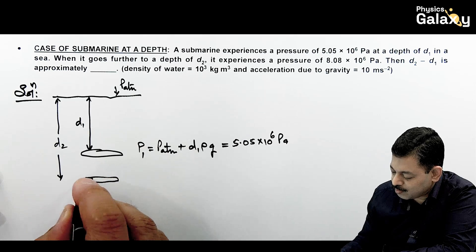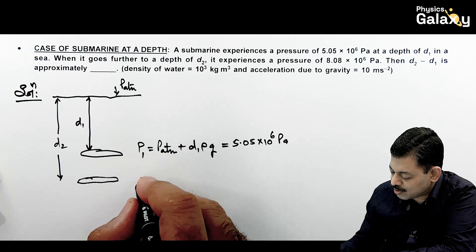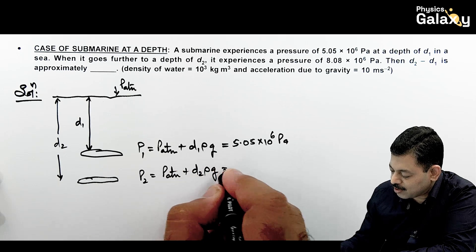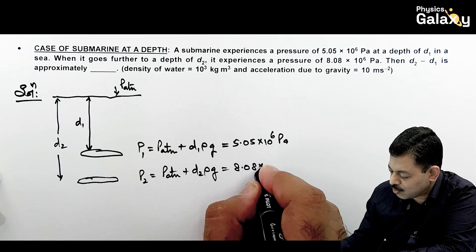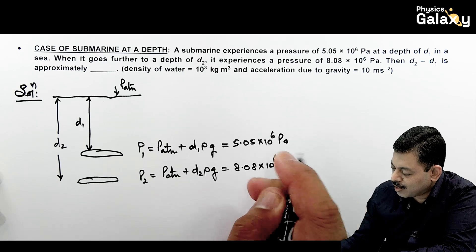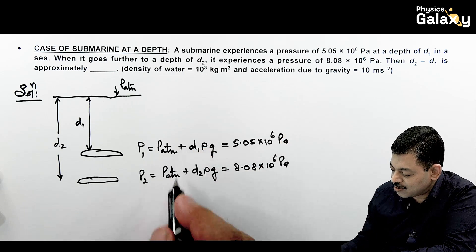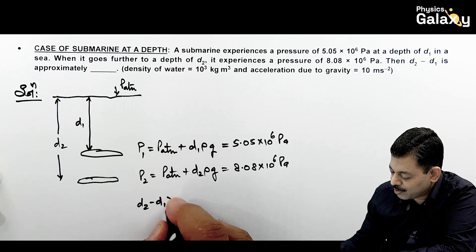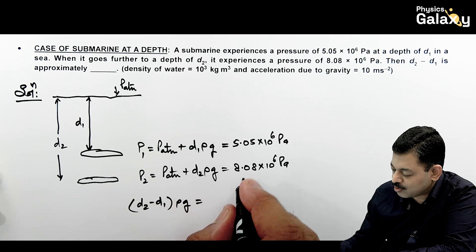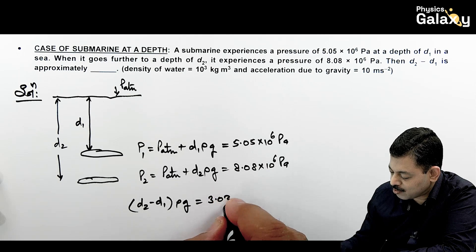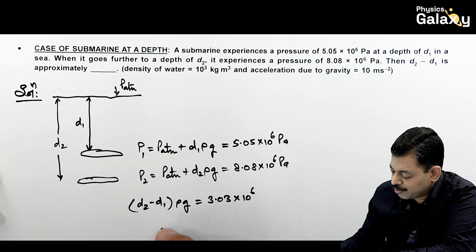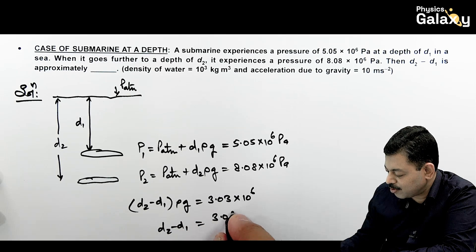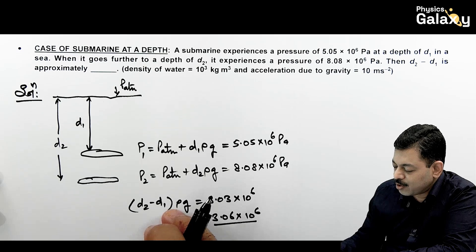At depth d2, the same or another submarine is at a level where pressure is P_atmospheric plus d2·ρg, which equals 8.08 × 10⁶ Pascal. Now to find d2 minus d1, we subtract the two equations. P_atmospheric gets cancelled out, giving (d2 - d1)·ρg = 8.08 - 5.05 = 3.03 × 10⁶.